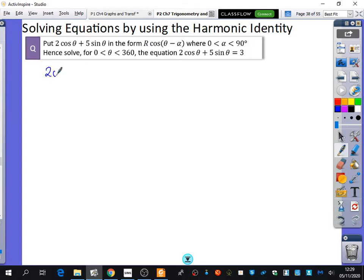We're going to go nice and quick for this beginning bit. We've got 2 cos θ plus 5 sin θ, and we're going to try and put it in the form of R cos(θ - α). So I'm going to do the expansion of R cos(θ - α), which is R cos θ cos α plus R sin θ sin α.